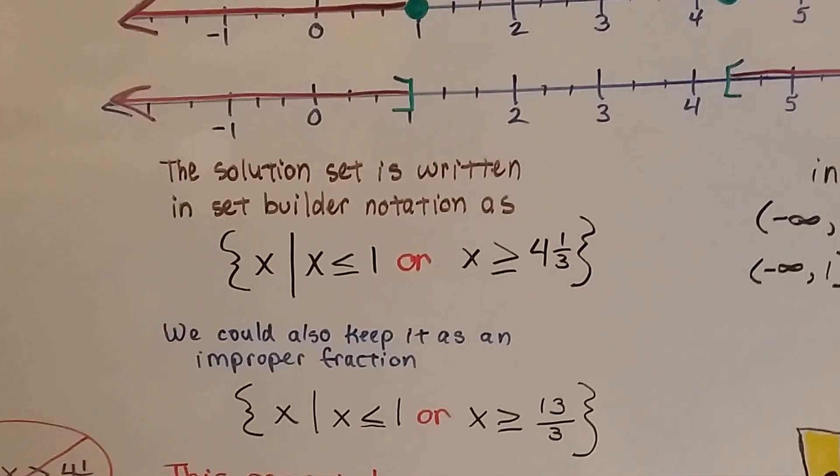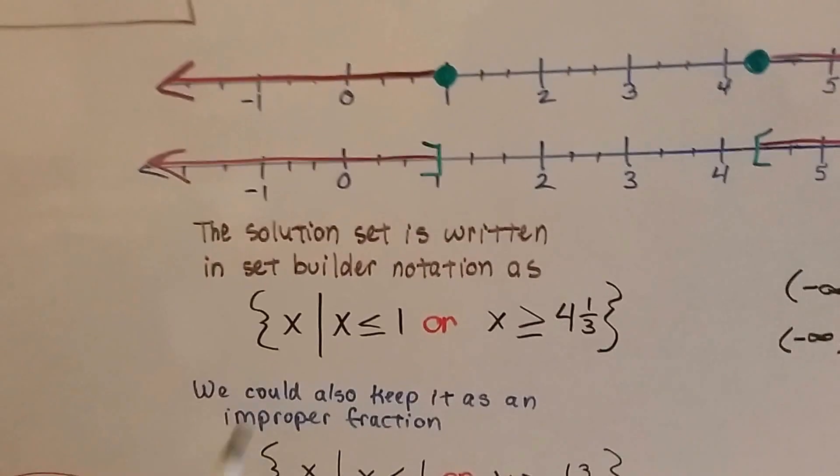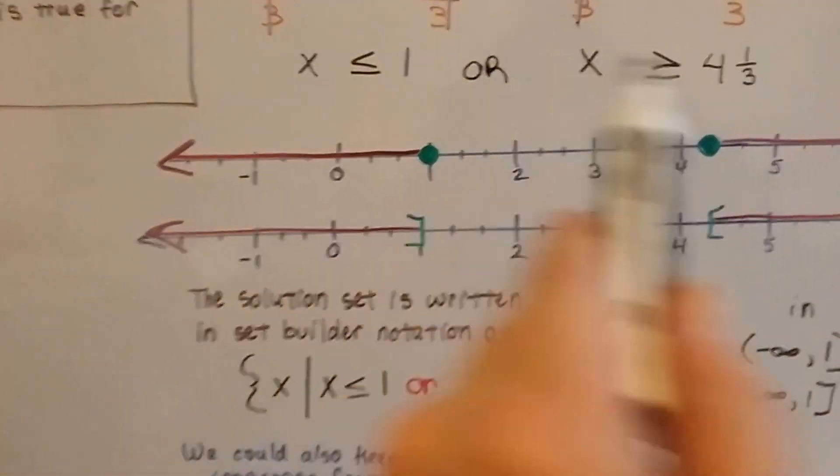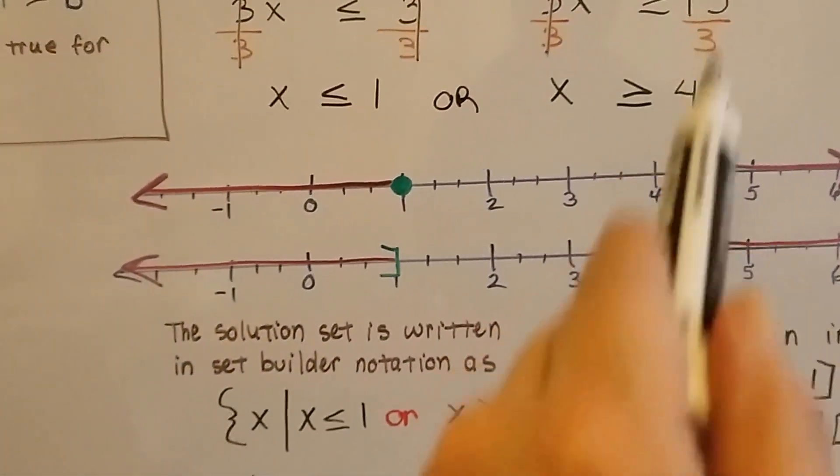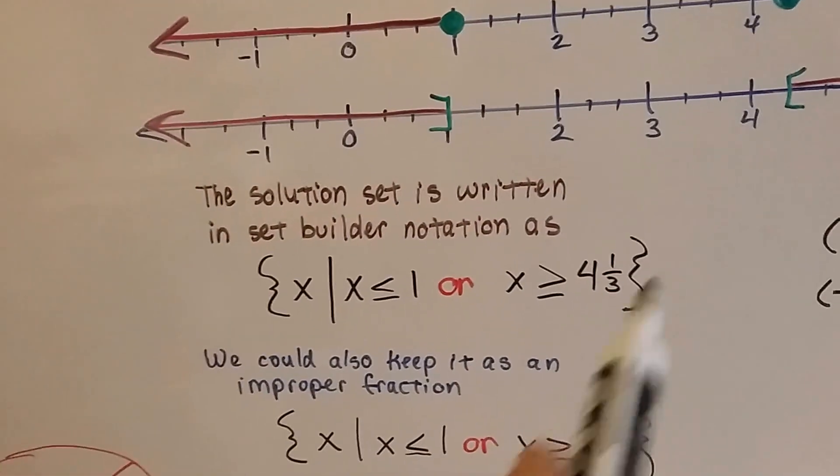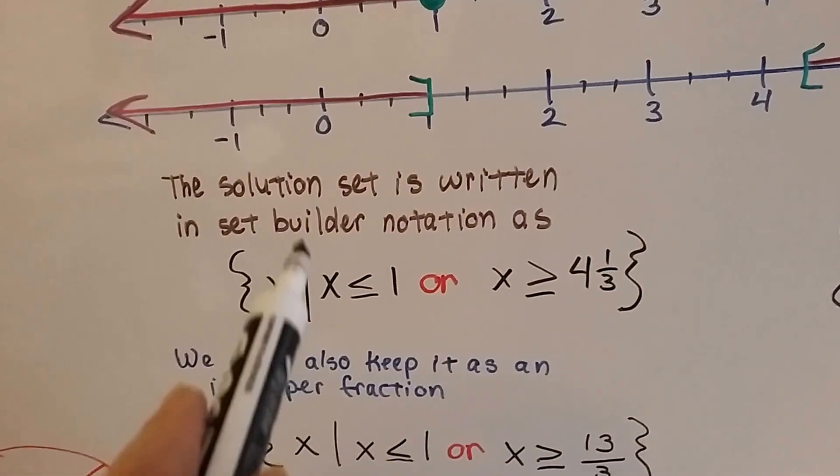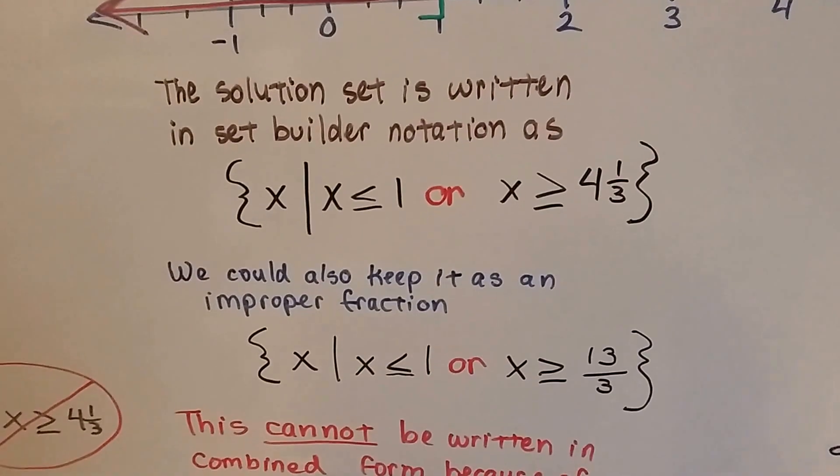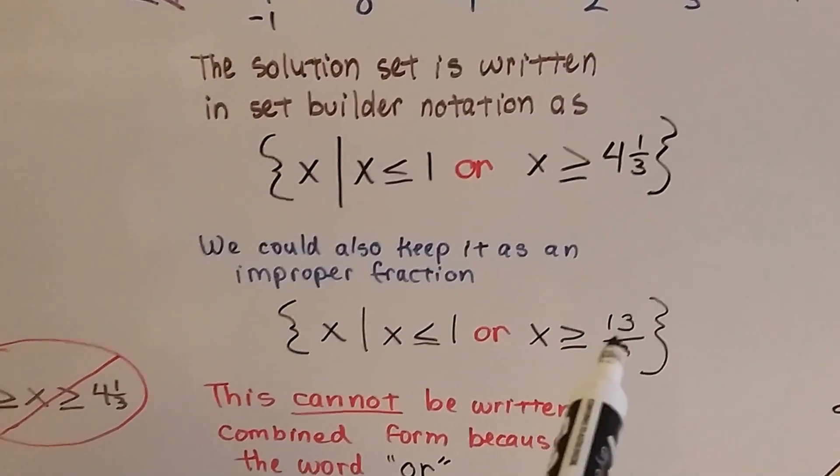And the solution set is written in set builder notation as just like this. Or you can keep it in the fraction if you want. But it's written just like this with the set braces, the x, and the such that bar. We can keep it as the improper fraction if we want to.